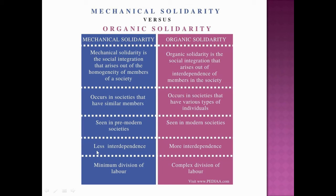In mechanical solidarity there is less interdependence, whereas in organic solidarity, which exists in complex modern industrial societies, there is heterogeneity whereby people depend upon one another — there is more interdependence and a complex division of labor. In mechanical solidarity, found in simpler traditional societies, there is a minimum division of labor.